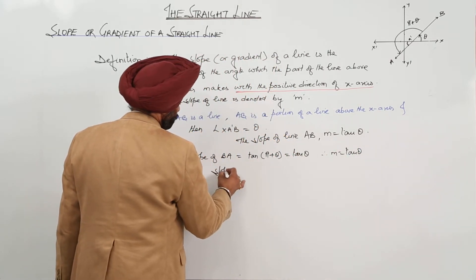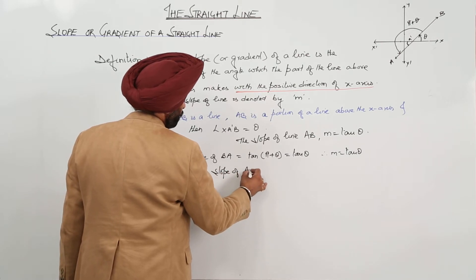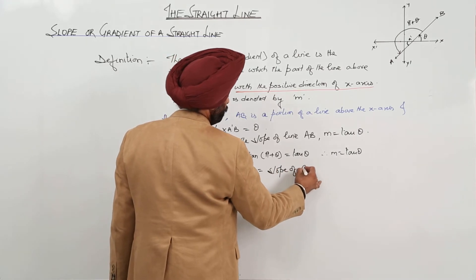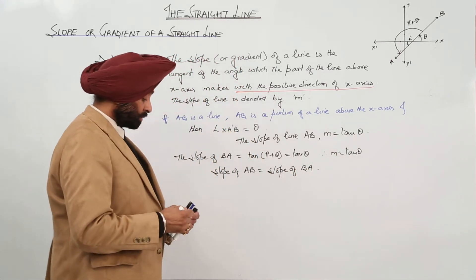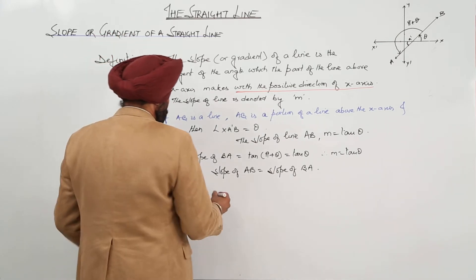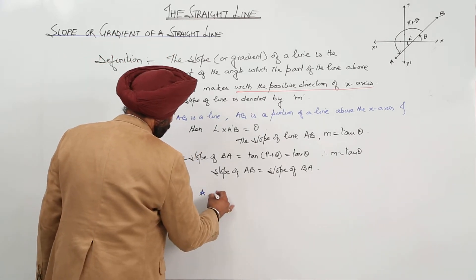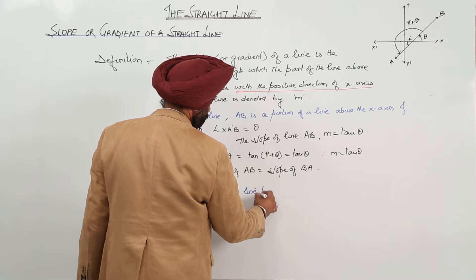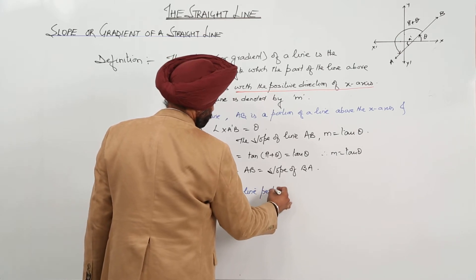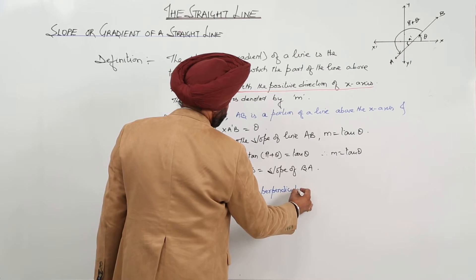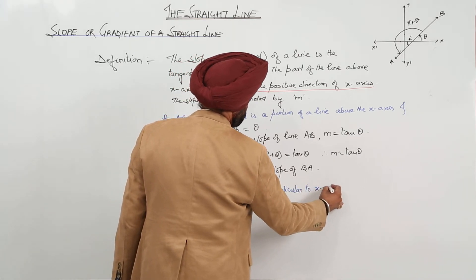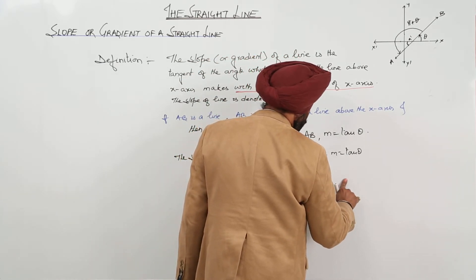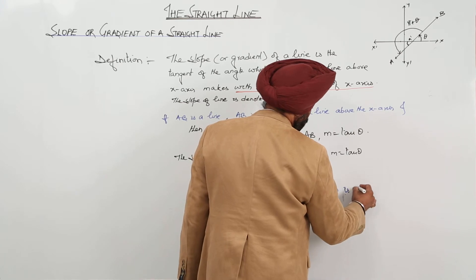Now, what we can write? Slope of AB is equal to slope of BA. One thing. And now, a small thing, just to tell you.